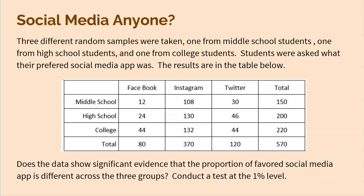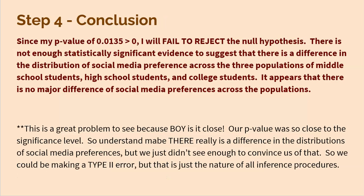Now if we go back to the original question, they did ask us to use a significance level of one percent. So now, as long as we have that p-value, we're ready to go and make our conclusion. Since my p-value of 0.0135 is greater than 0.01, I fail to reject the null hypothesis. There is not enough statistically significant evidence to suggest that there is a difference in the distribution of social media preferences across the three populations of middle school students, high school students, and college students. It appears that there is no major difference of social media preferences across the populations.